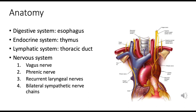Vital structures of the digestive, endocrine, and lymphatic systems within the thoracic cavity include the esophagus, thymus, and thoracic duct. The thoracic duct collects lymph from the majority of the body including both legs, the abdomen, the left side of the chest, and left side of the head and neck, transporting this lymph and lipids from the intestines back to the venous blood.